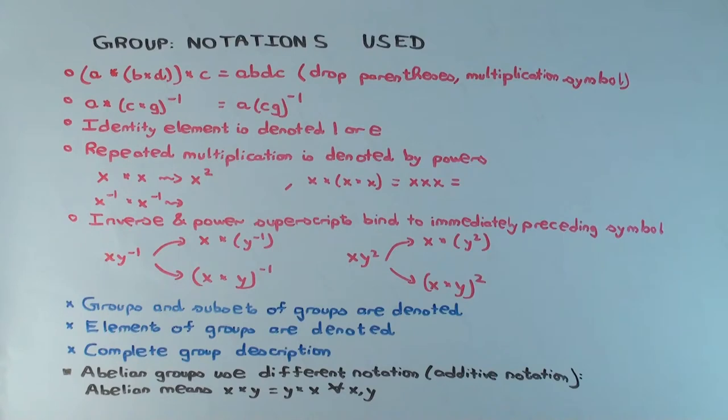The identity element is denoted one or E, especially before beginners. We often denote it as E, like when you're just starting out in group theory, just so you don't confuse it with the number one, the real number one. But as you get more and more used to groups, people often slip and denote it as one, unless there's an actual numerical one going on somewhere.